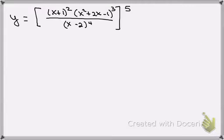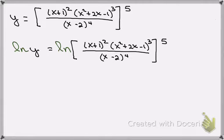We're going to start with that expression y equals all of that stuff raised to the 5th power. And then we're just going to apply the natural log to both sides of that equation. We can certainly do that because it's an equation. As long as we do the same thing to the left and right, then we're fine.